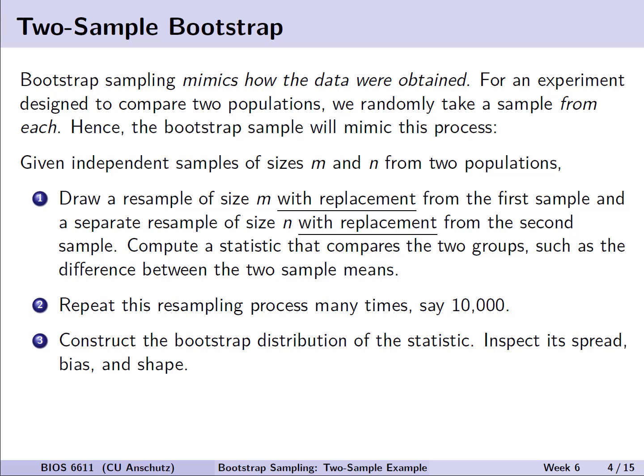For example, if we're given independent samples of size M and N from two populations, we're first going to draw a resample of size M with replacement from just that first sample. And similarly, we will draw a separate resample of size N with replacement from the second sample. So again, we're not mixing the two samples together, we're resampling within each sample specifically.